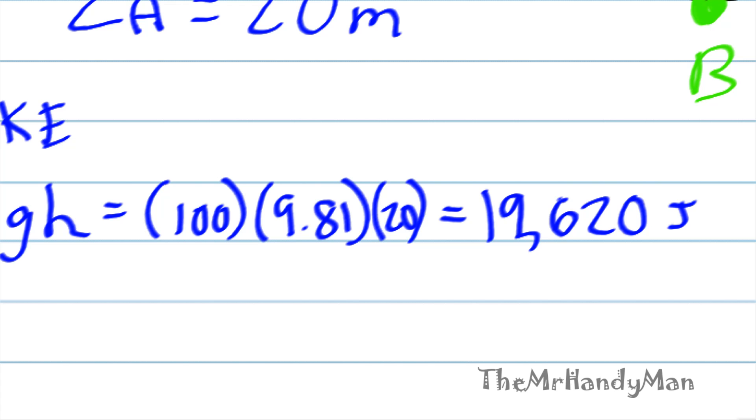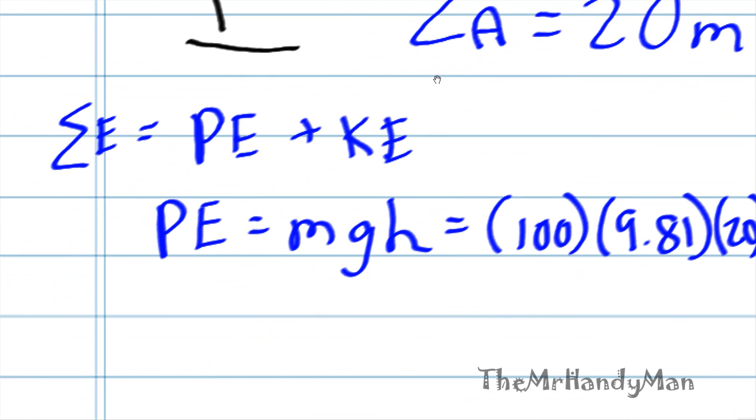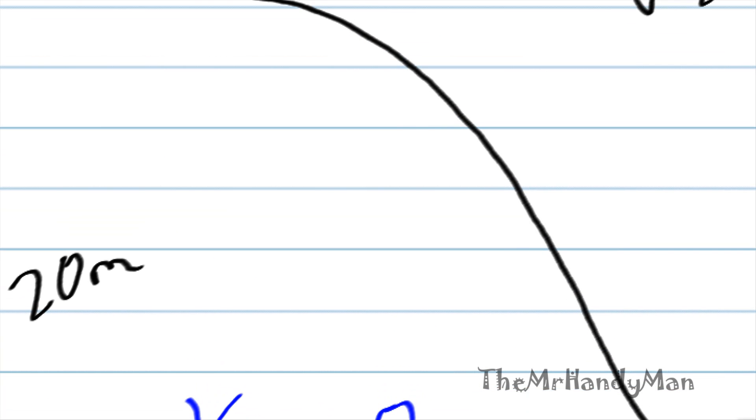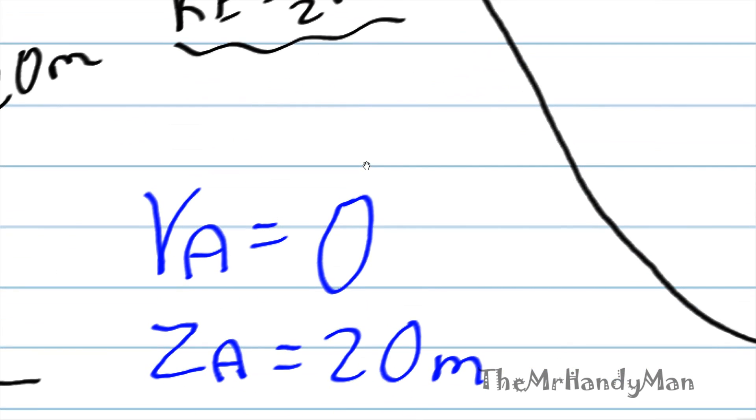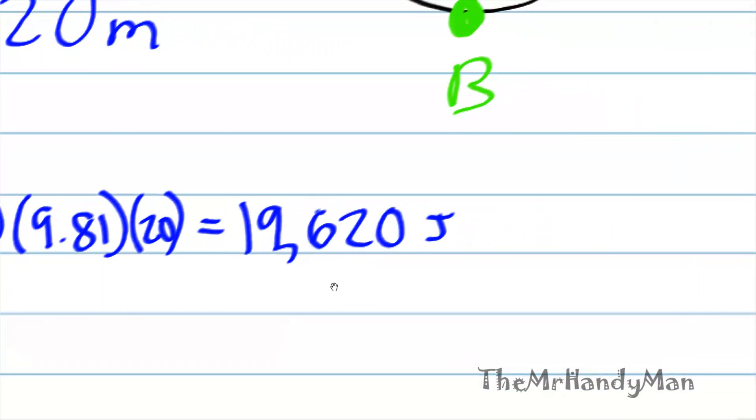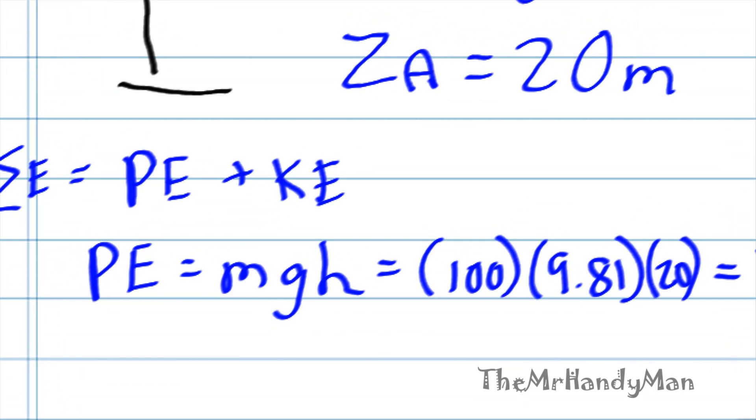What about the kinetic energy at point A? We know that kinetic energy is one-half MV squared. So if V is equal to zero, as it is with point A, then we know that the kinetic energy is going to equal zero. So the total energy for this instance is just 19,620 because the kinetic energy portion is going to go to zero.